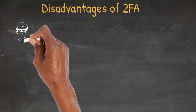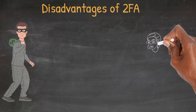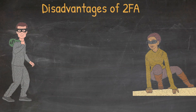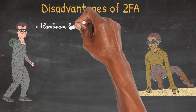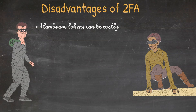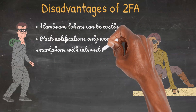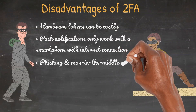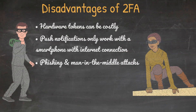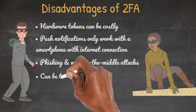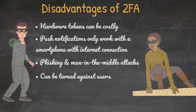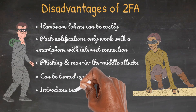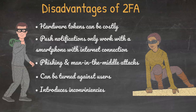As with any technology, none has a guarantee of 100%, and as such the disadvantages of two-factor authentication include: one, use of hardware tokens can be costly and are not foolproof to hacking attempts; two, push notifications, while being the most secure form of 2FA, only work with a smartphone with an internet connection; three, text message and voice-based authentication are still prone to phishing and man-in-the-middle attacks if not well implemented or if flaws exist within the cell network; four, it can be turned against the users — hackers can set up or reconfigure two-factor authentication to keep you out of your own accounts.